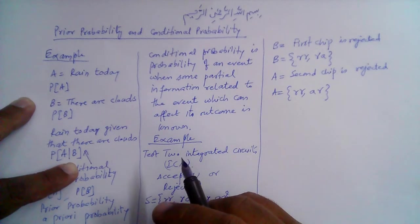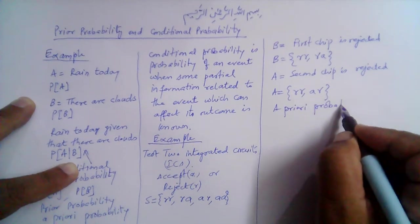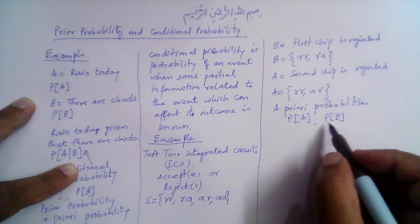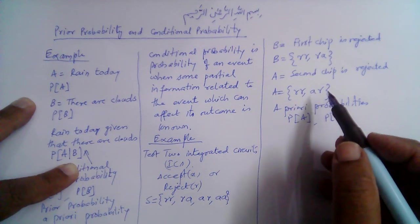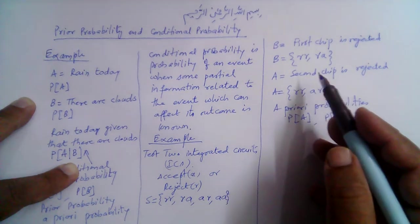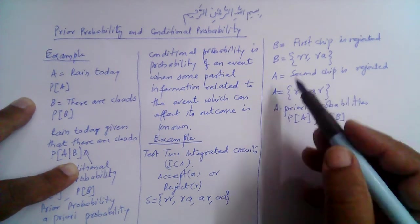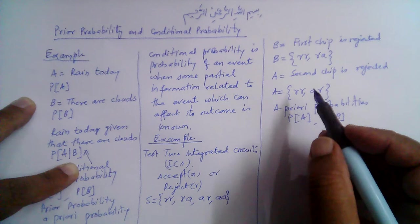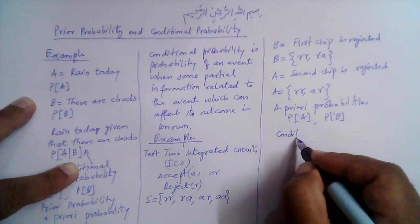The a priori probabilities P(A) and P(B) — the probability that the first chip is rejected or the probability that the second chip is rejected — are quite small, because integrated circuits are usually manufactured in a very clean environment. But what if we know that the first chip has been rejected? Given this information, the probability that the second chip is also rejected changes, because if both chips come from the same silicon wafer, the probability of the second chip being rejected goes high.